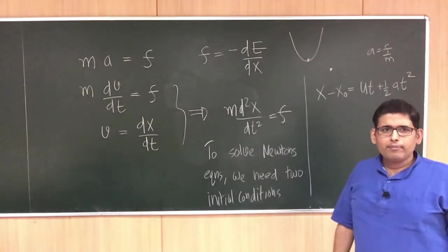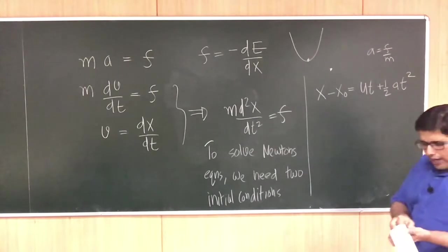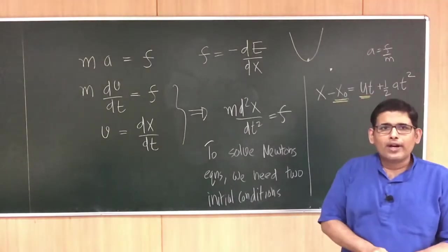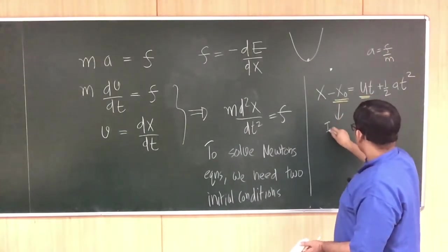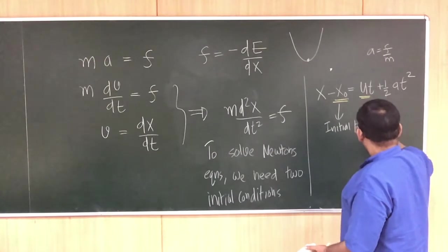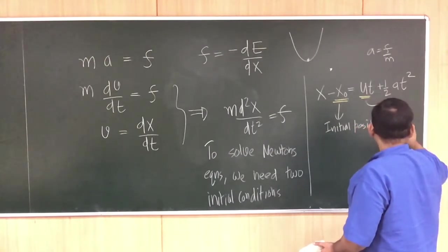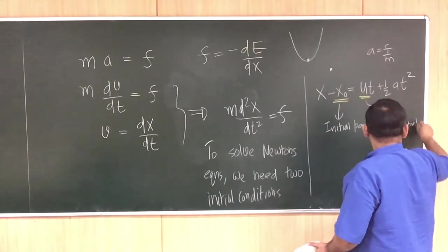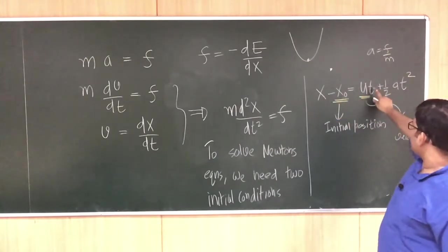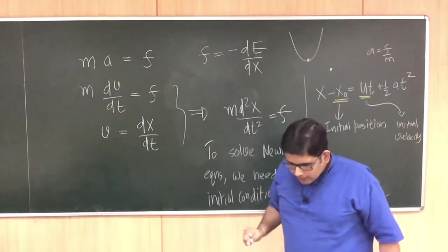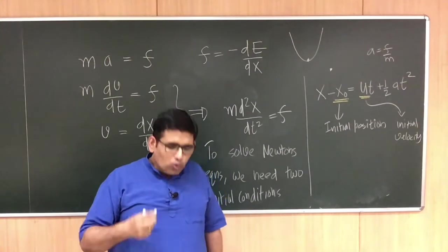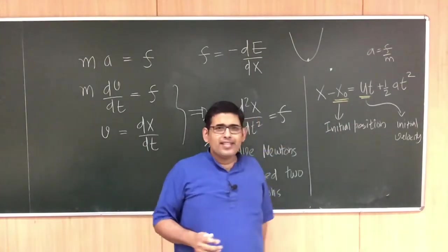So if you know the acceleration f/m, you can write down the position equation. You have two unknowns: x₀ the initial position, and u the initial velocity. If I know these two, I can calculate position as a function of time — at any given time I can calculate the position. It is well known that to solve Newton's equations, you need two constants: the initial position and the initial velocity.